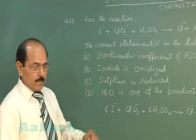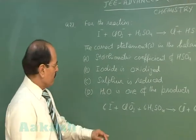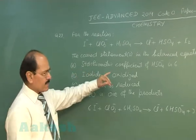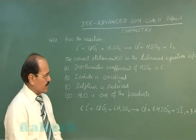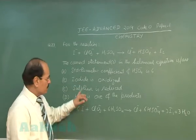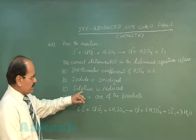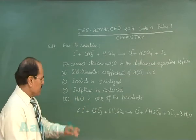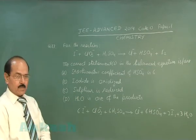If you look at the balanced chemical reaction, we find option A is correct - stoichiometric coefficient of HSO₄⁻ is 6. Option B: iodide is oxidized, that is also true. Option C: sulphur is reduced - it is not correct. Option D: H₂O is one of the products.